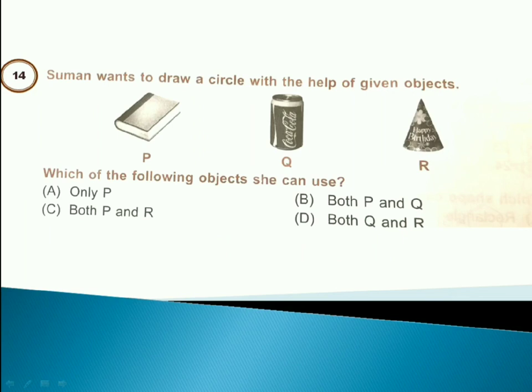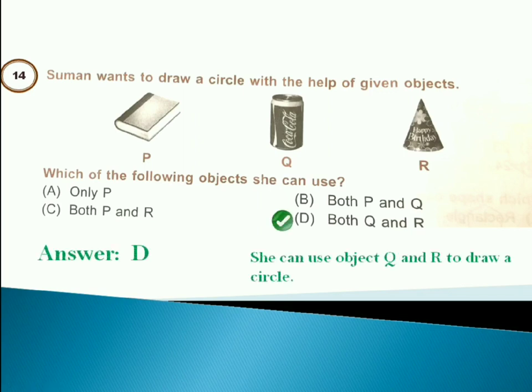Someone wants to draw a circle with the help of the given objects. Which of the following objects can she use? Answer is option D. She can use objects Q and R to draw a circle.